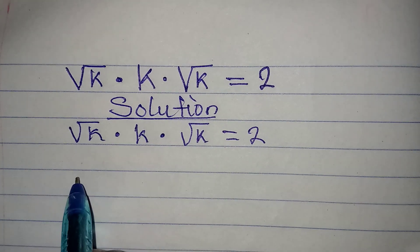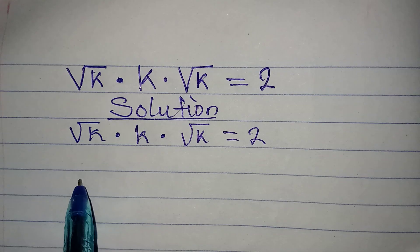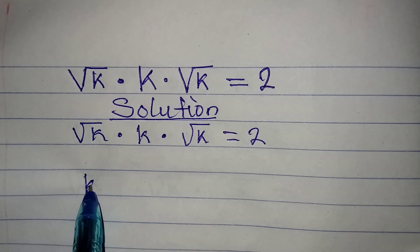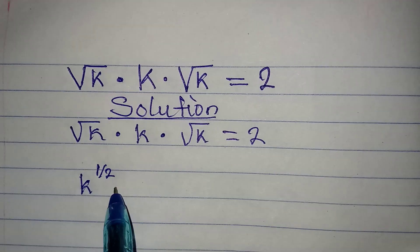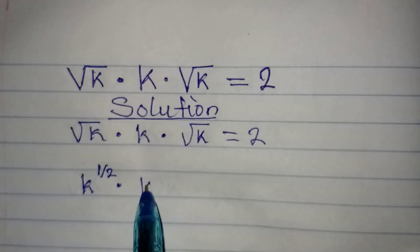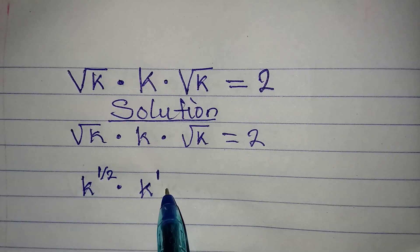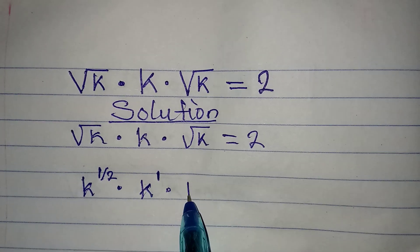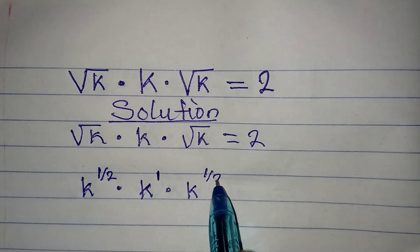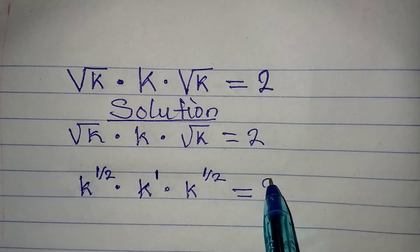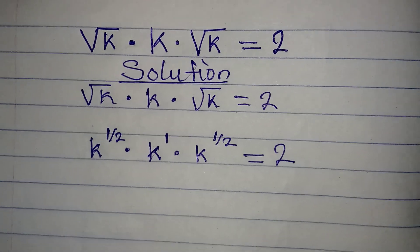The first thing we do is rewrite: square root of k is the same as k to the power of 1/2, then multiplied by k to the power of 1, then times k again which is k to the power of 1/2. This equals 2.